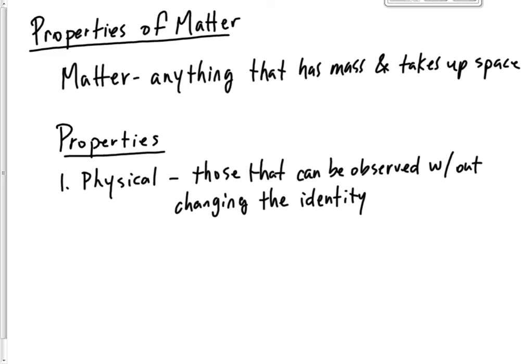All right, so most of your properties that you're thinking off the top of your head are going to be physical properties. Examples: color, density, melting point, boiling point, freezing point. Any phase changes, those are all going to be physical properties.